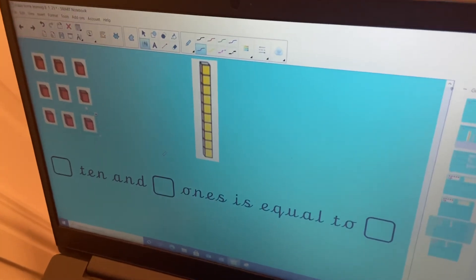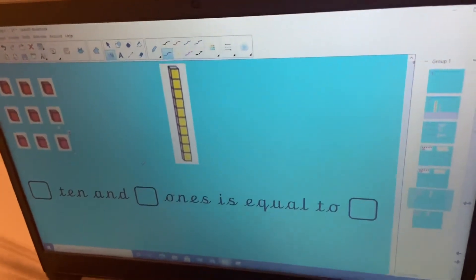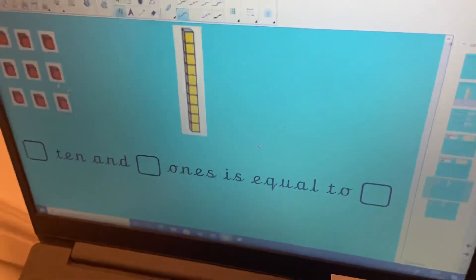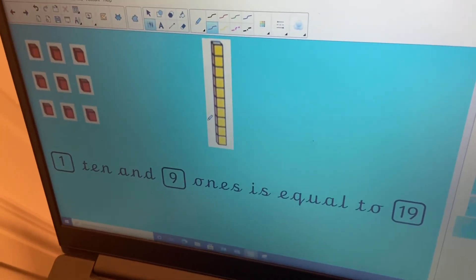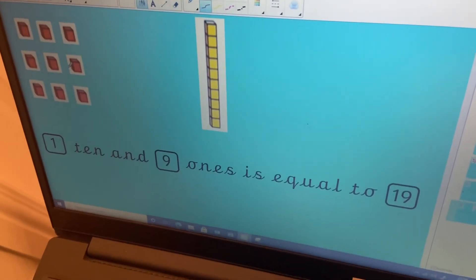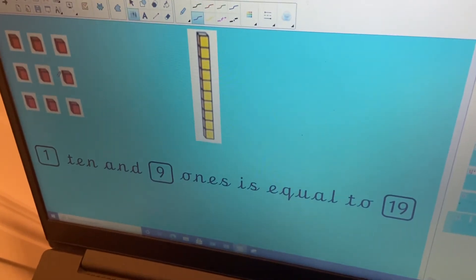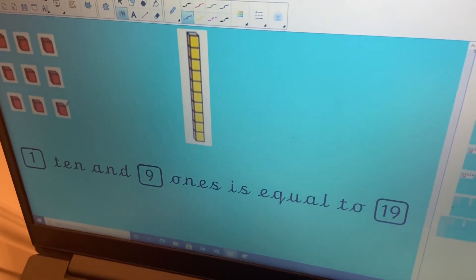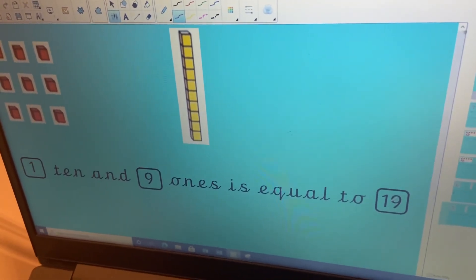Now I want you to have a go again. Pause the video and I want you to have a go at writing how many tens and how many ones. So we've got one ten and we've got nine ones. One, two, three, four, five, six, seven, eight, nine. So we've got one ten and nine ones and it's equal to 19.